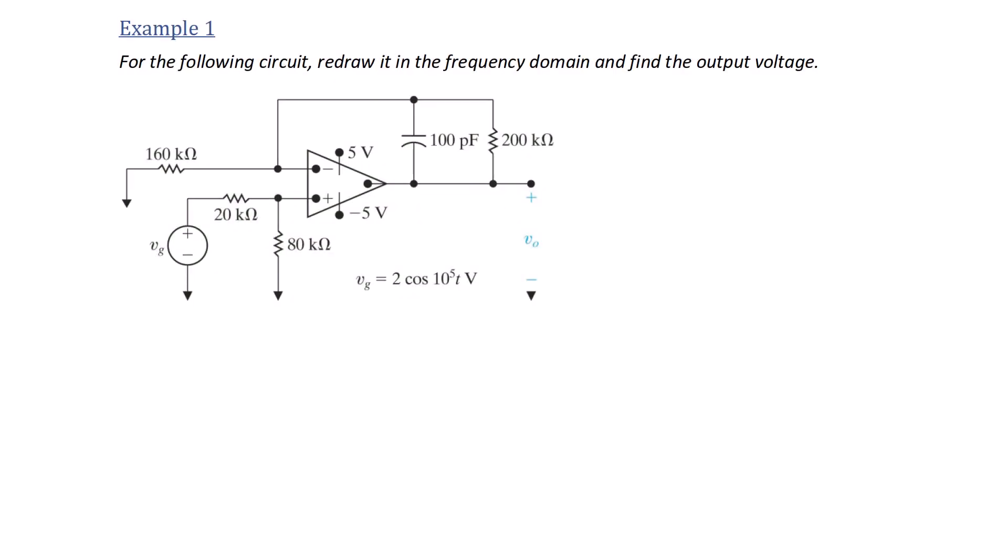Example 1: For the following circuit, redraw it in the frequency domain and find the output voltage. Here we have a circuit that has a frequency of 10 to the fifth radians per second given in the time domain.